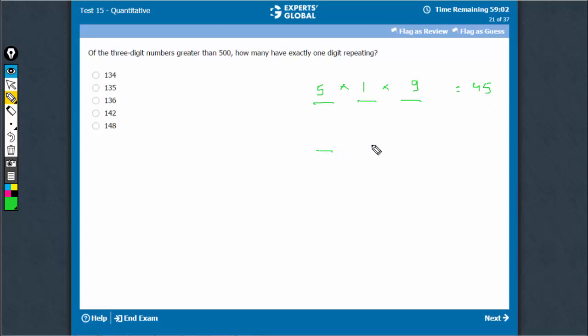The second case is when, again, 5 cases here. We assume that these two are repeating now. So out of these, 5 times 1, this can take 9 values except the one that has already been counted, that has already occurred, so 45.